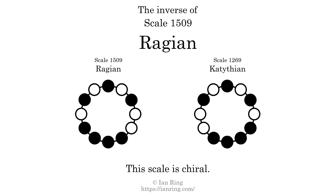The inverse of a scale is a mirror image — it is what you get when the sequence of intervals is reversed. The inverse of this scale is scale 1269, also known as Cotithian. This scale is chiral; it cannot transform into its inverse by rotational transformation.